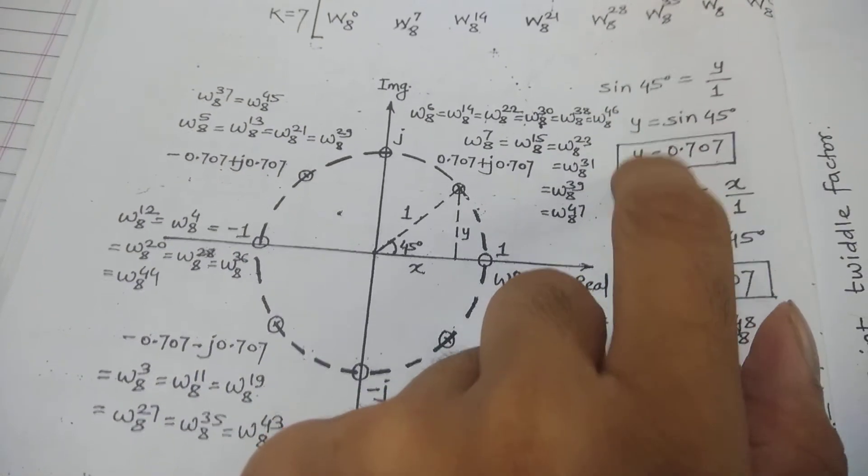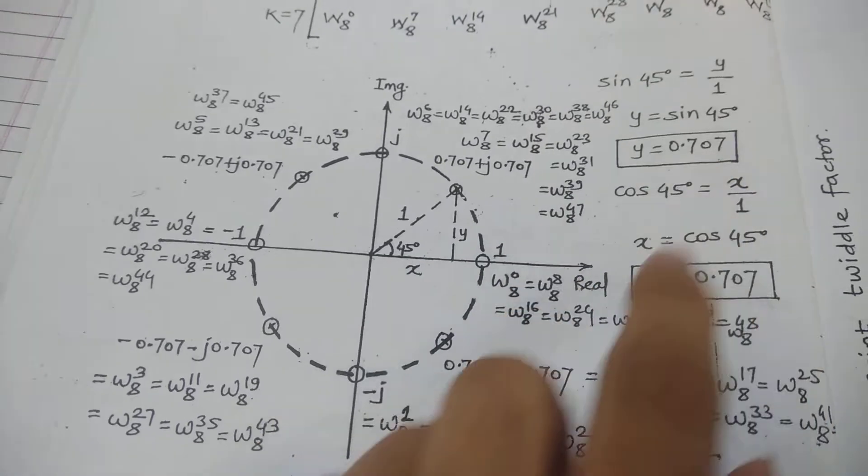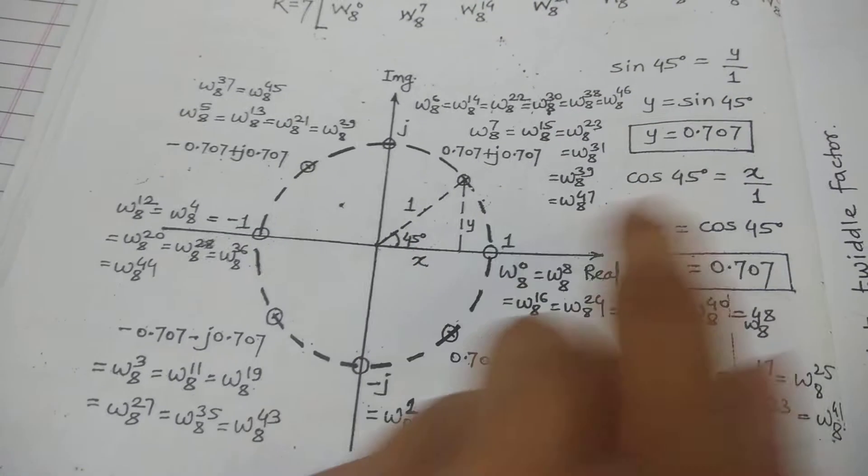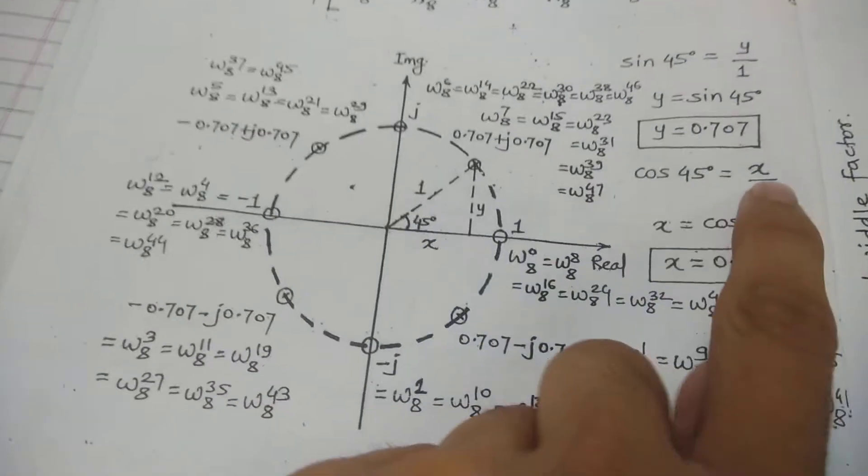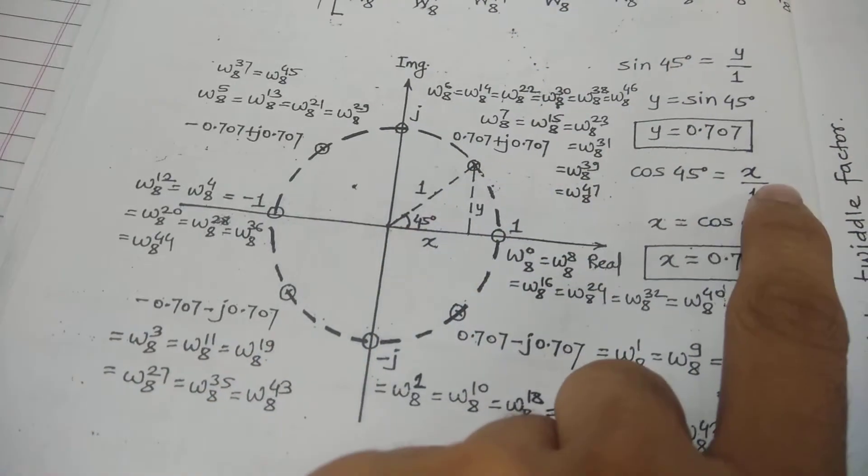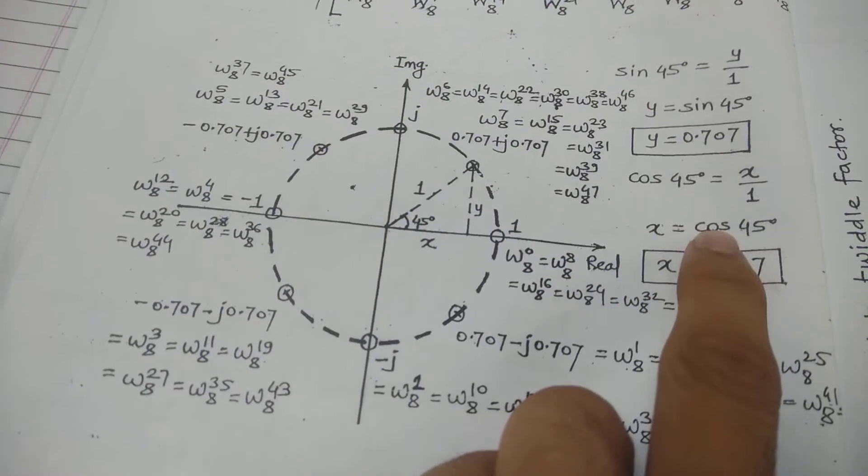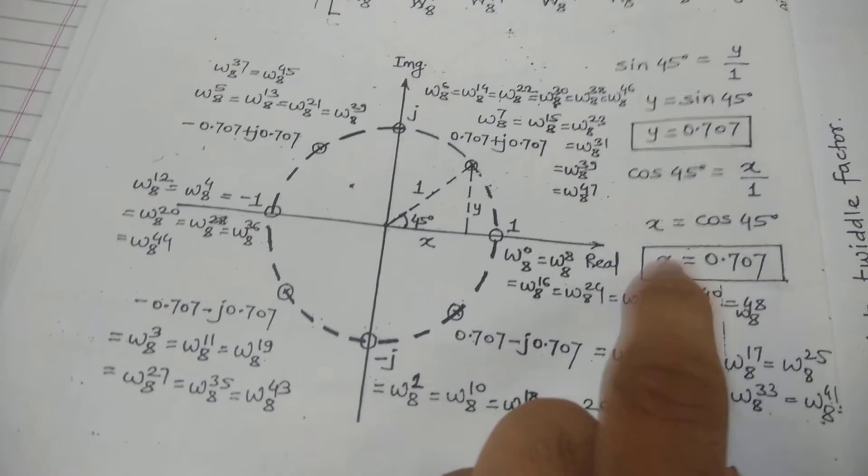Y is equal to 0.707. After that, you can apply cos 45. Cos 45 is adjacent side, that is x, upon hypotenuse, that is 1. So x is equal to cos 45, which is 0.707.